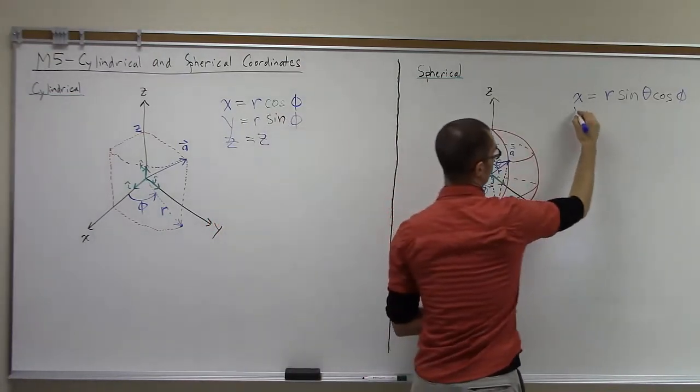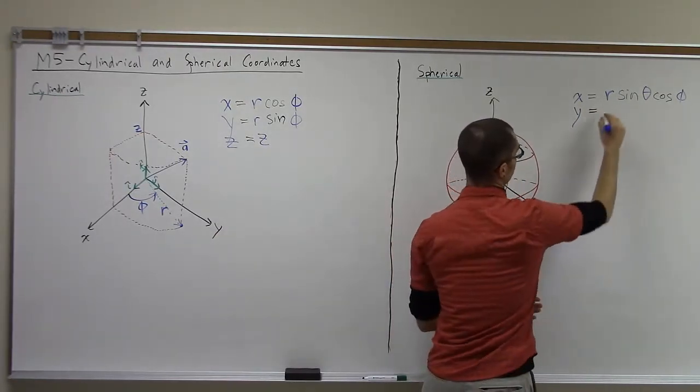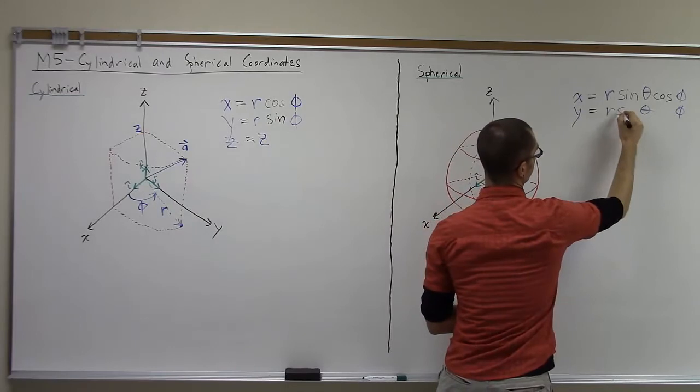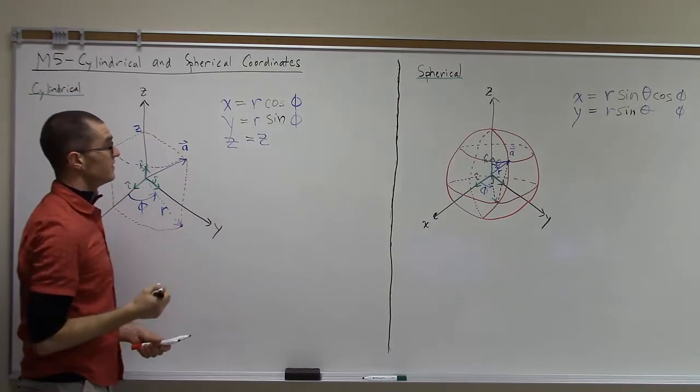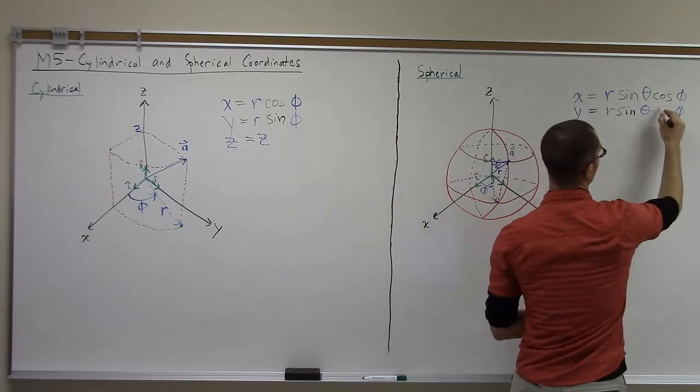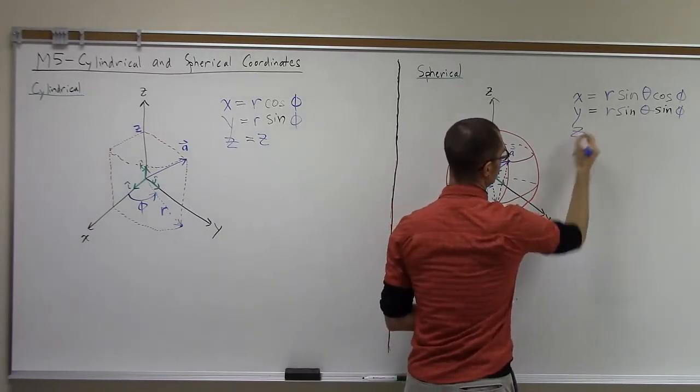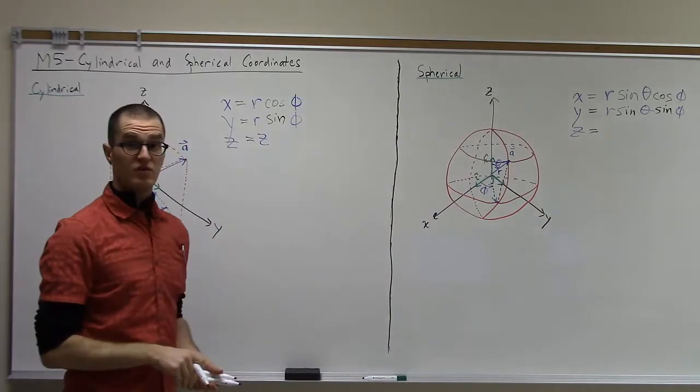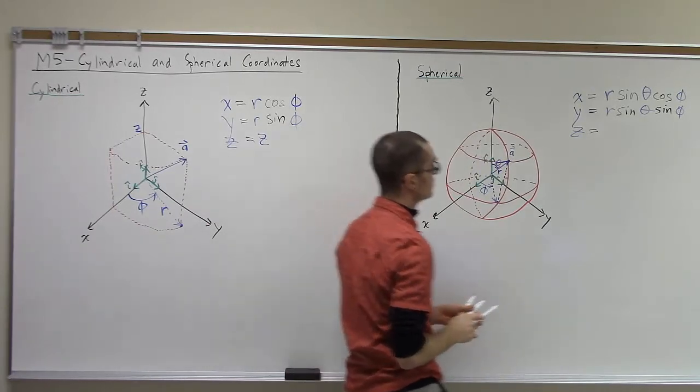In the same way we can get the y component in the Cartesian coordinates by taking r sine theta. So this part here, r sine theta, is the same as r defined in the cylindrical coordinate system. And then to get the y component we take sine of phi. Here the z coordinate is also a function of position unlike in the cylindrical coordinate system. The z component is now going to be r cosine of theta.